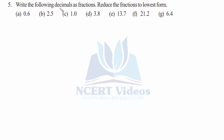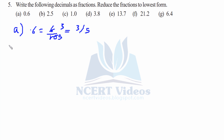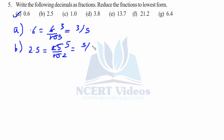Question 5: Write the following decimals as fractions and reduce the fractions to lowest form. First, 0.6 can be written as six over ten. It is reducible by two: six divided by two over ten divided by two gives you three over five — not further reducible, so that's your answer. Similarly for part B: 2.5 is 25 over 10, reduced by five to give five over two.